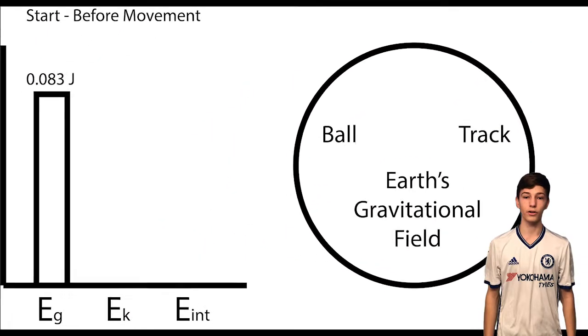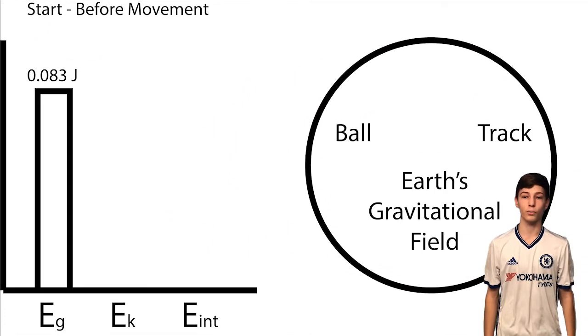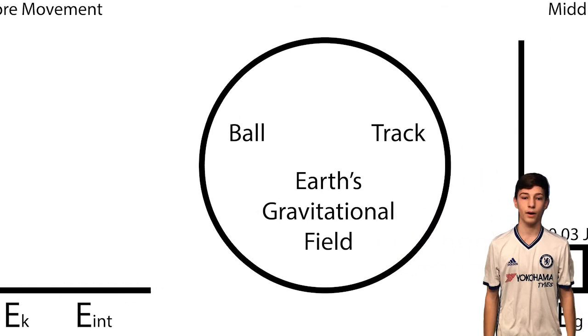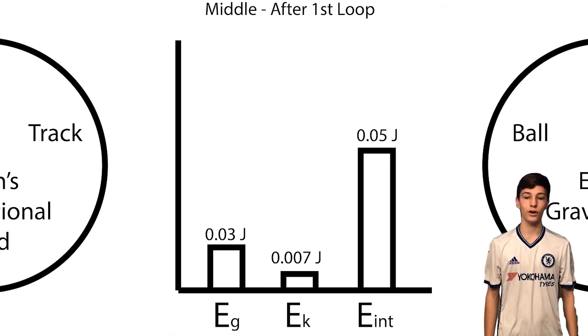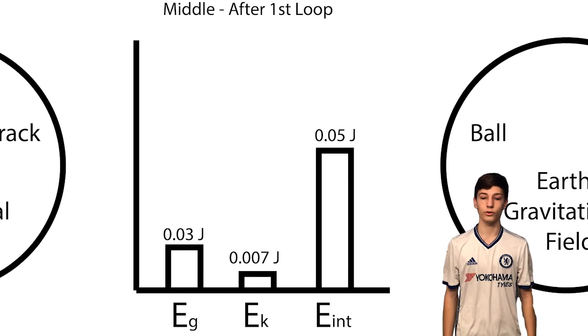Before the marble starts moving, the gravitational potential energy is 0.083 joules. Halfway through, after it has lost a lot of its energy to friction, the gravitational potential energy is 0.03 joules, the kinetic energy is 0.007 joules and the internal energy is 0.03 joules.